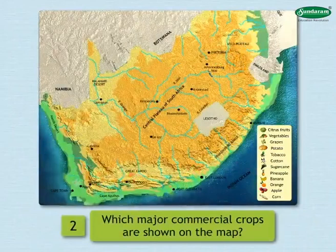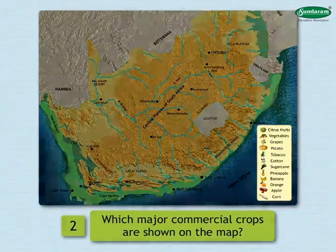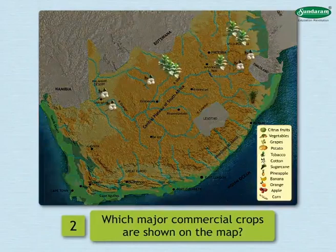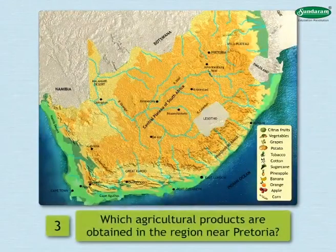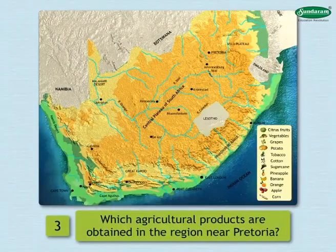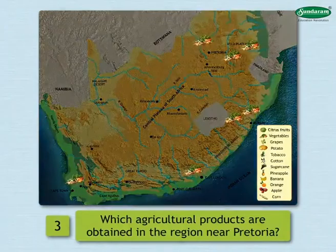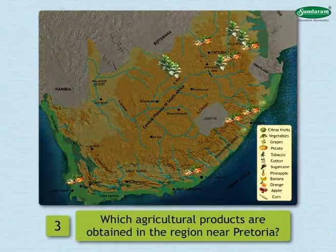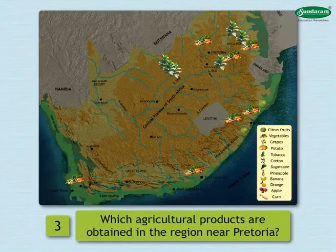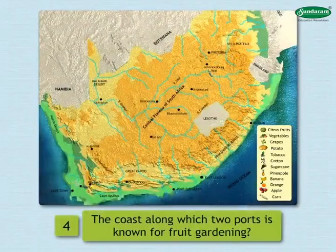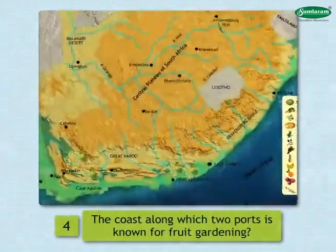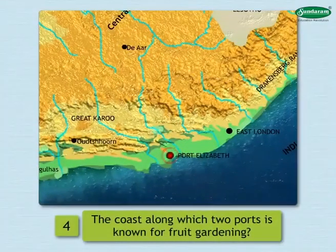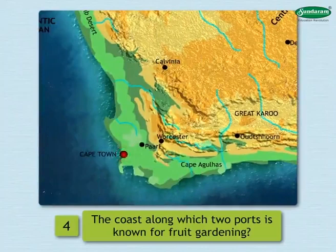3. Which agricultural products are obtained in the region near Pretoria? Agricultural products like vegetables, tobacco, and citrus fruits are obtained near Pretoria. 4. The coast along which two ports is known for fruit gardening? The coast along Port Elizabeth and Cape Town is known for fruit gardening.